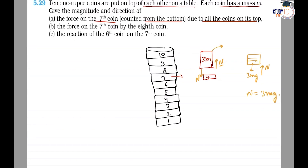From this we can say that the force exerted on the seventh coin due to all the coins on its top is equal to 3mg.